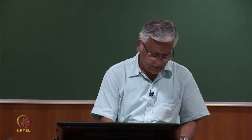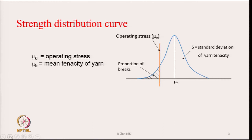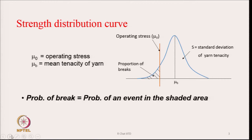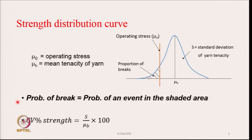End breaks therefore affect our productivity and also affect the quality of the yarn, and hence can affect the quality of the fabric that we finally produce. Therefore we need to study end breaks. Now looking at the fundamentals: we are showing a diagram on the right hand side. The blue bell-shaped curve is the strength distribution diagram or tenacity distribution diagram of a yarn, following a normal distribution, where mu_v is the mean breaking stress or average strength of the yarn.